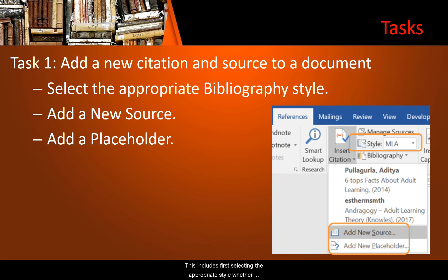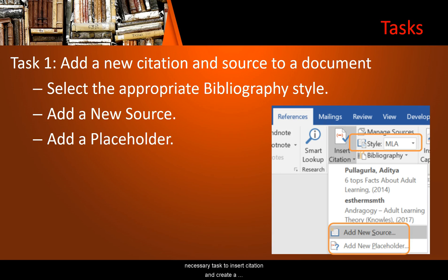Task 1 includes first selecting the appropriate style, whether it's MLA, Chicago, APA, or others. Then add a new source — you can add several types of sources, each revealing different fields for information related to a specific type of source. Then add a placeholder source if necessary.